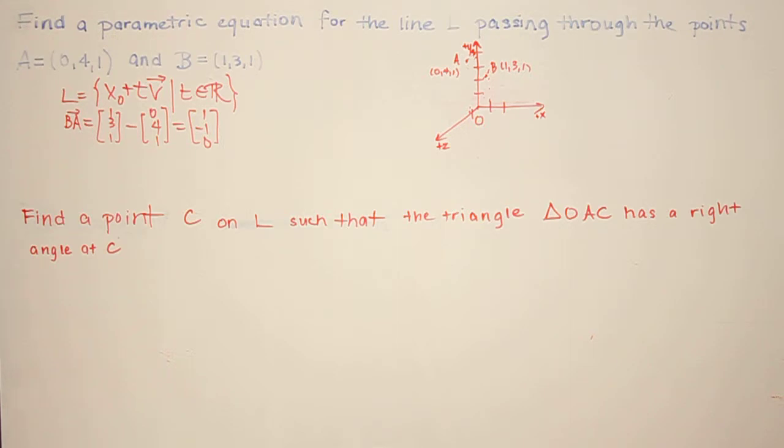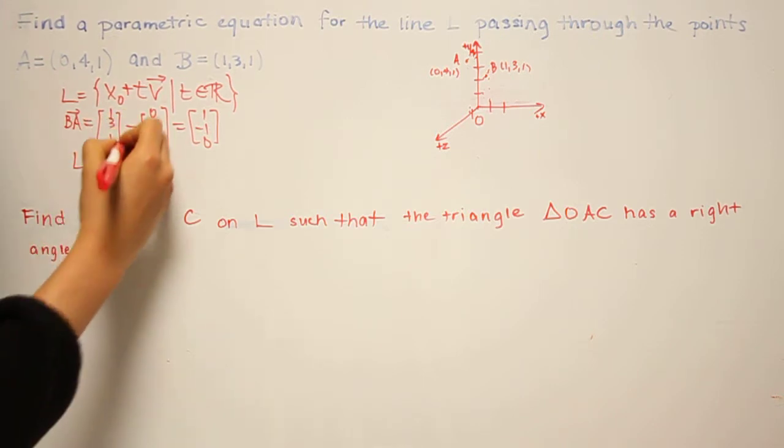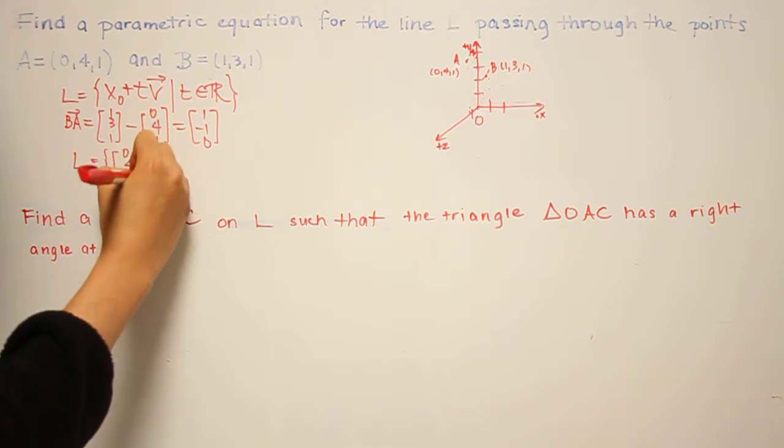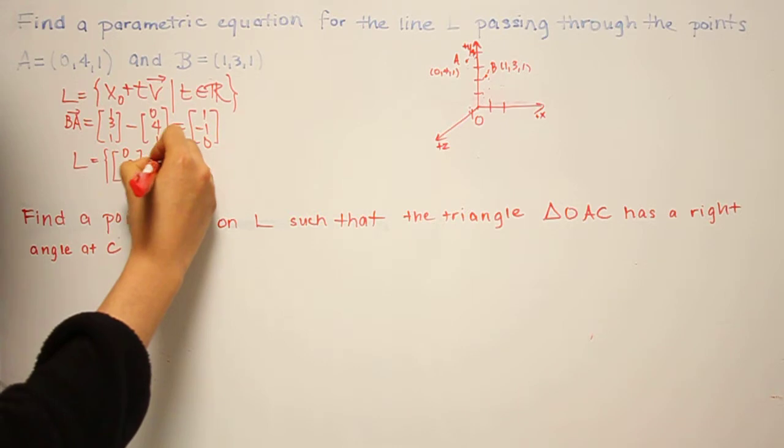And for the fixed point x0, we can choose also either A or B. So say we choose A. In this case, then, the equation for L would be (0, 4, 1) plus (1, -1, 0) times a constant t.